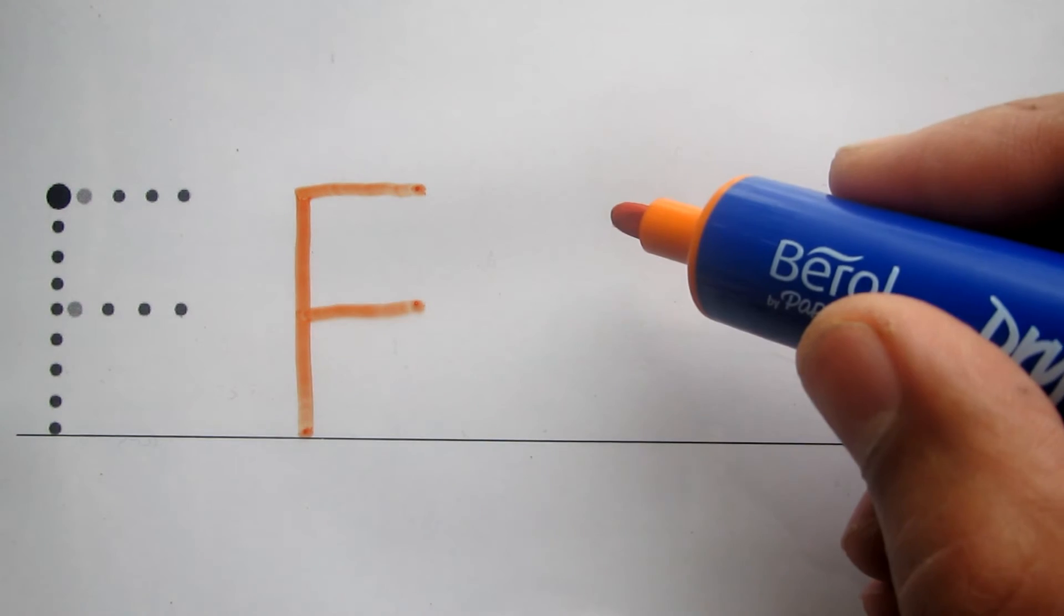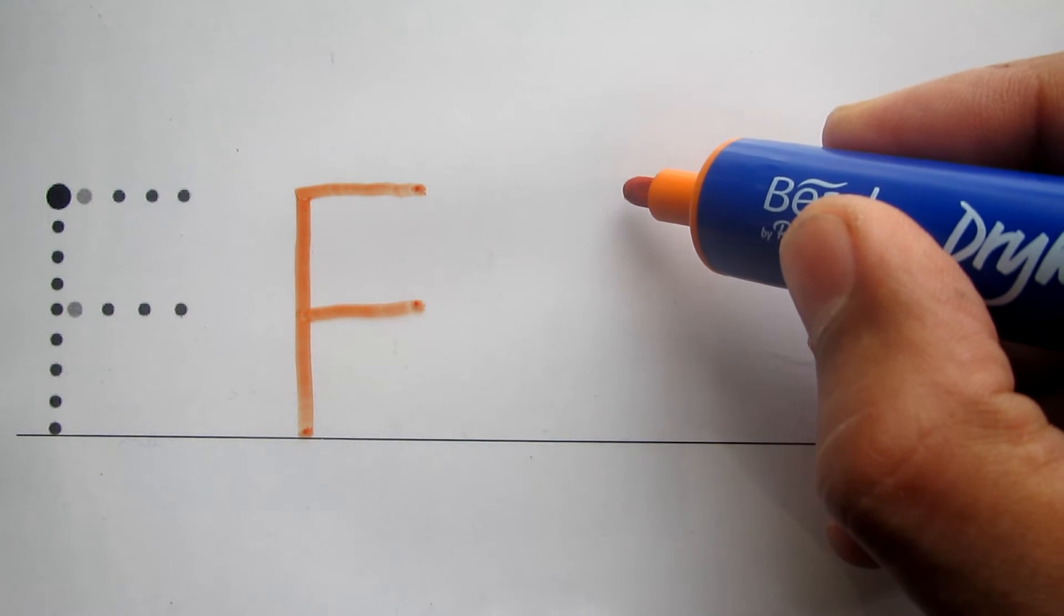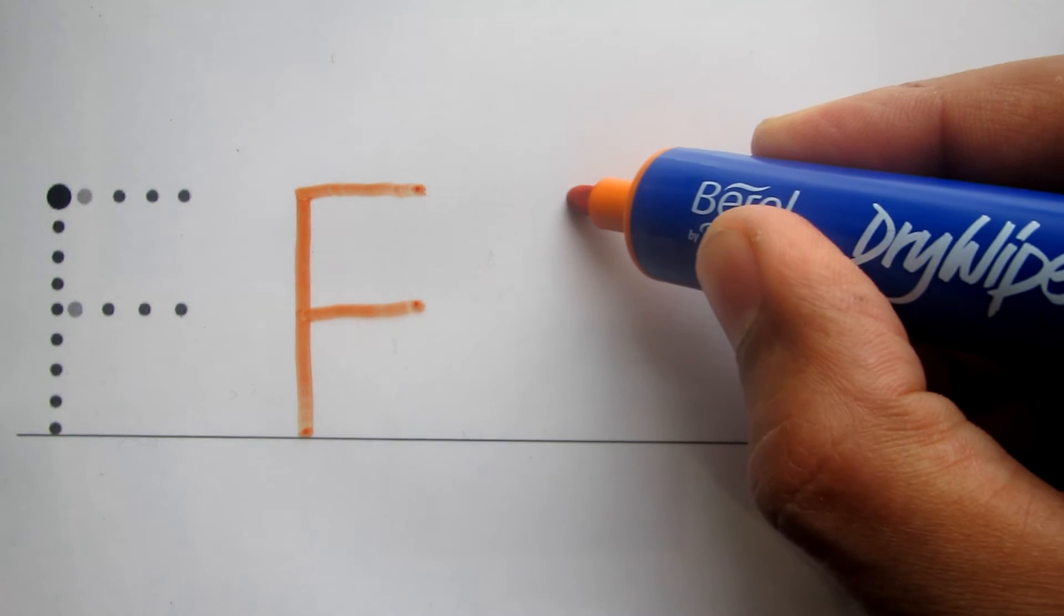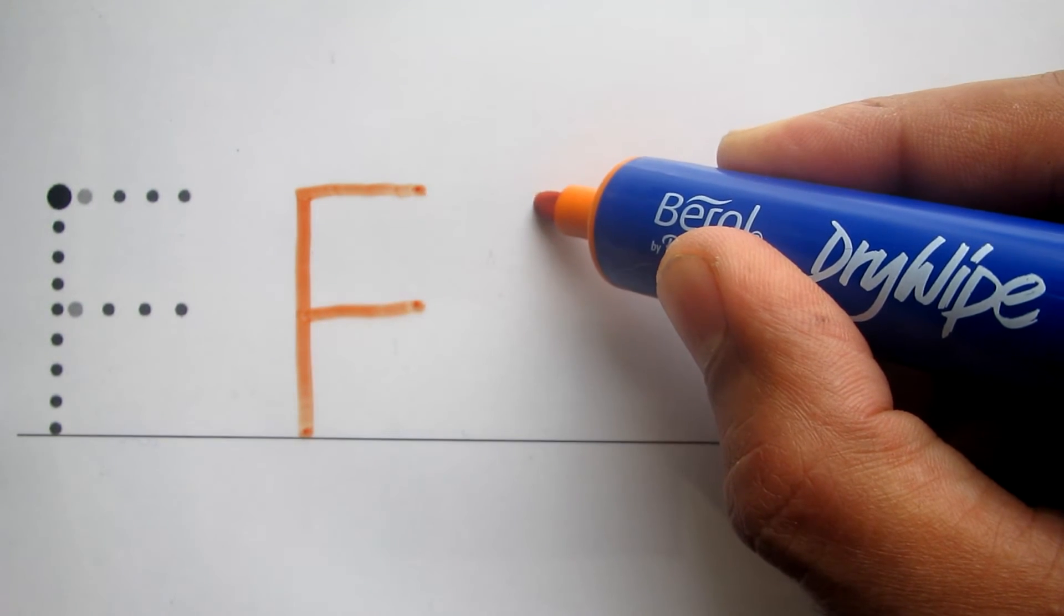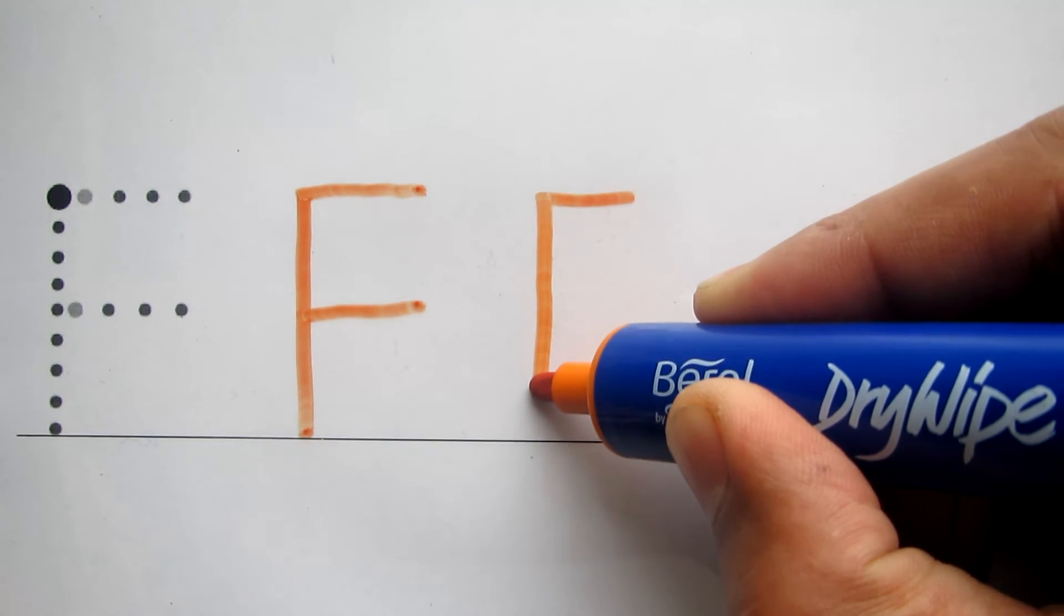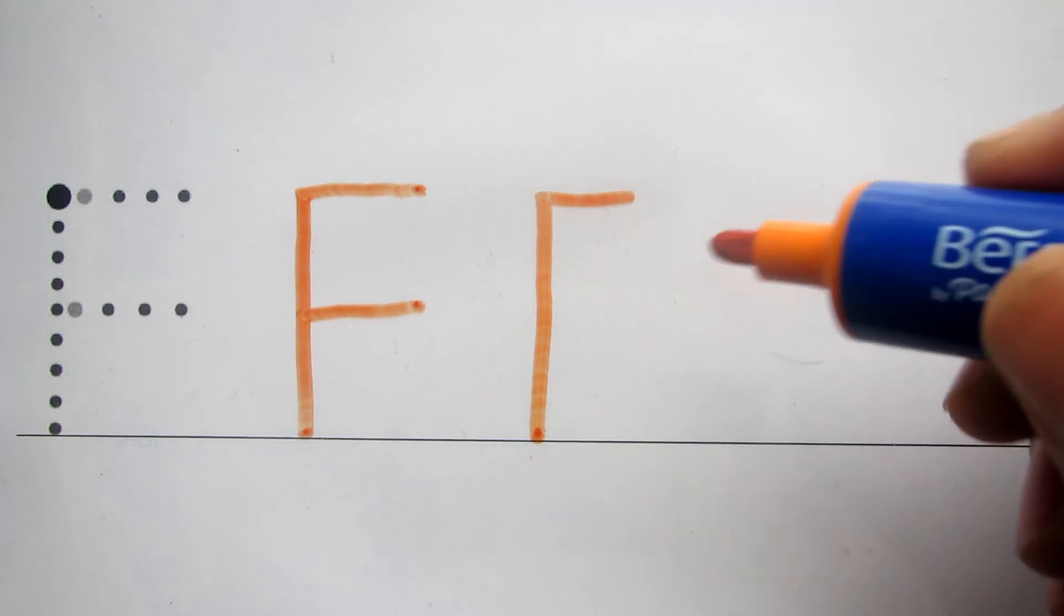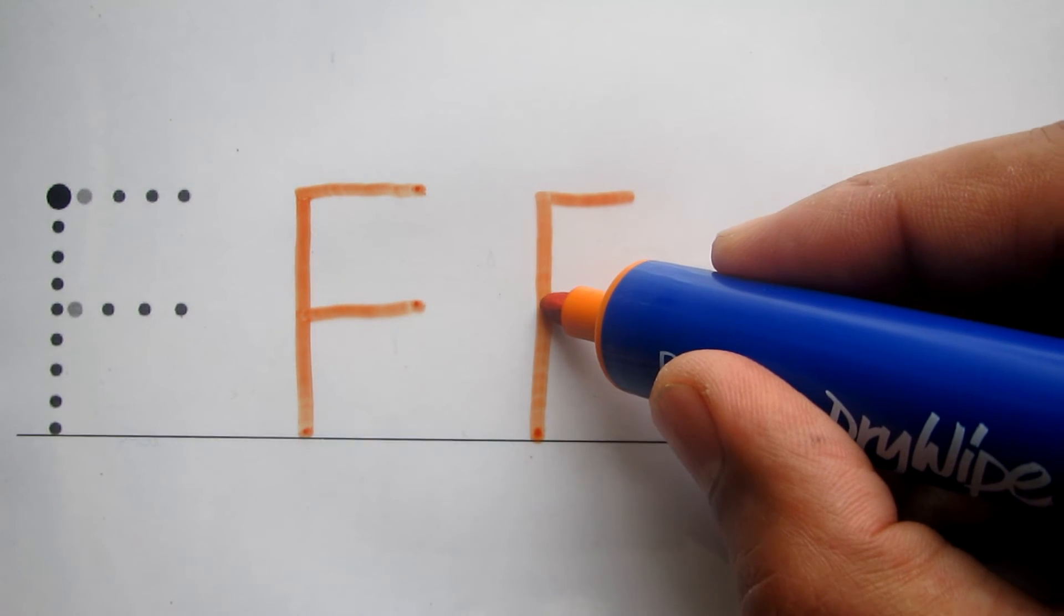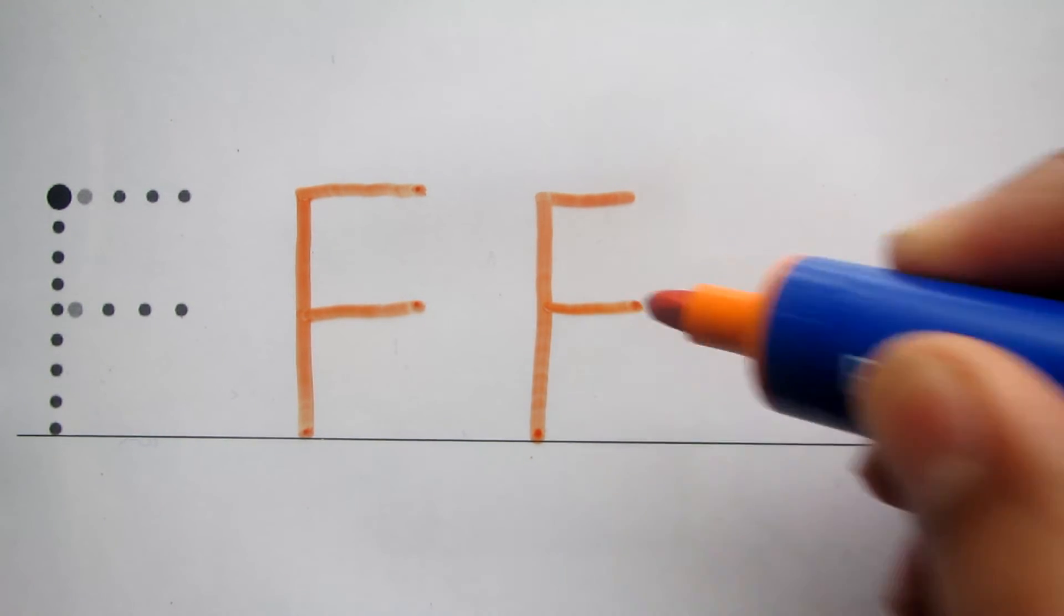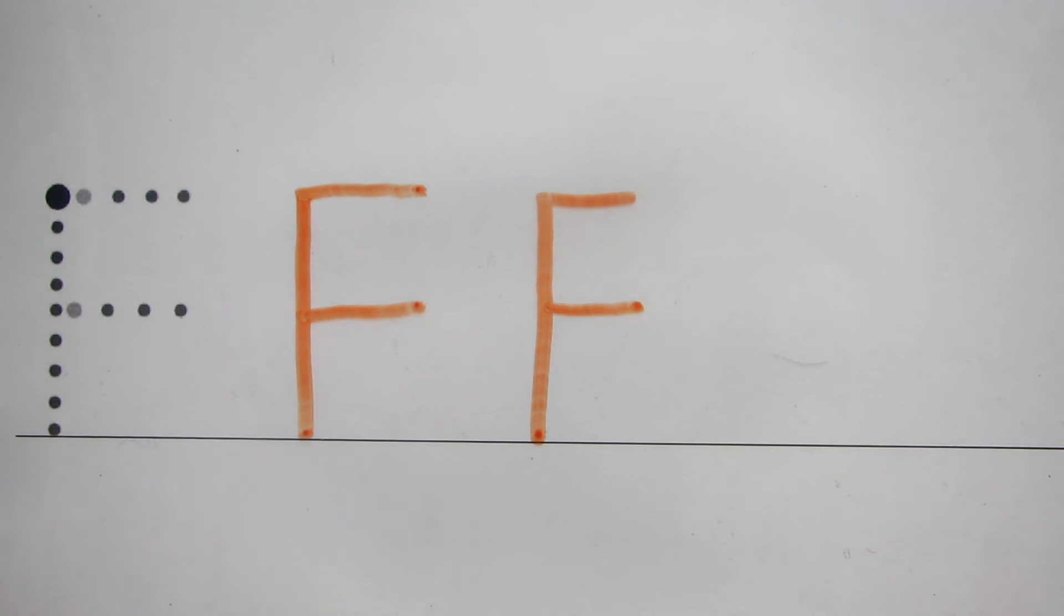Ok, there's a different version of this. Start on the side, go across and one stroke to the bottom. And then finish off by doing a stroke across the middle. Capital F.